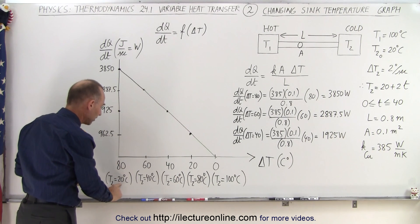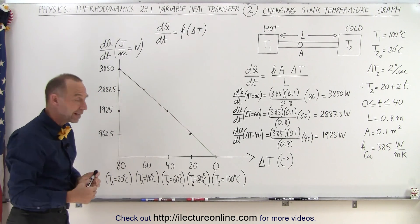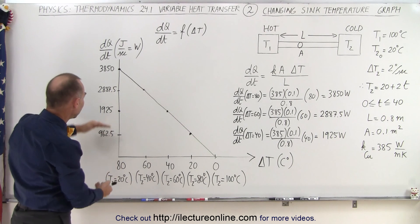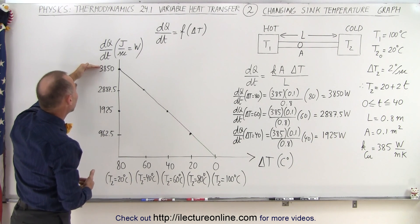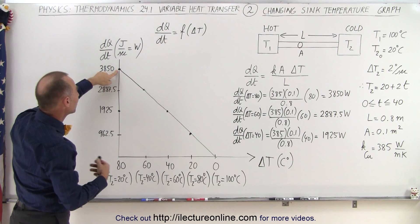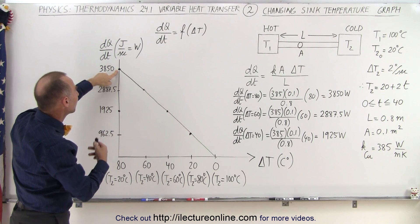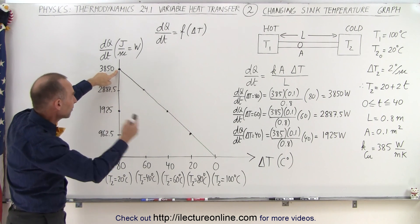For example, when we start out at T2 being 20 degrees centigrade, at T equals zero, then the difference is 80 degrees, or 80 centigrade degrees, and then the heat conductivity will cause 3850 joules of heat to transfer every second, which is 3850 watts.